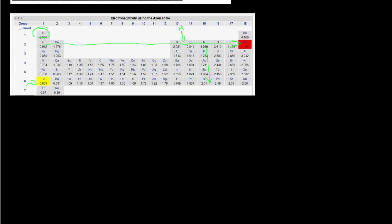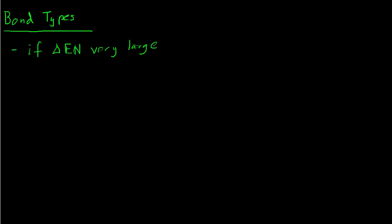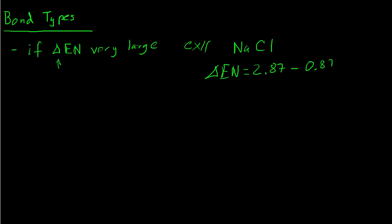One way to use the electronegativity scale is to identify different types of bonds based on the difference in electronegativities — delta EN — which we always take as the larger minus the smaller. For example, in sodium chloride (NaCl), chlorine has an electronegativity of 2.87 and sodium has an electronegativity of 0.87, giving a difference of 2.0 — a very large electronegativity difference.